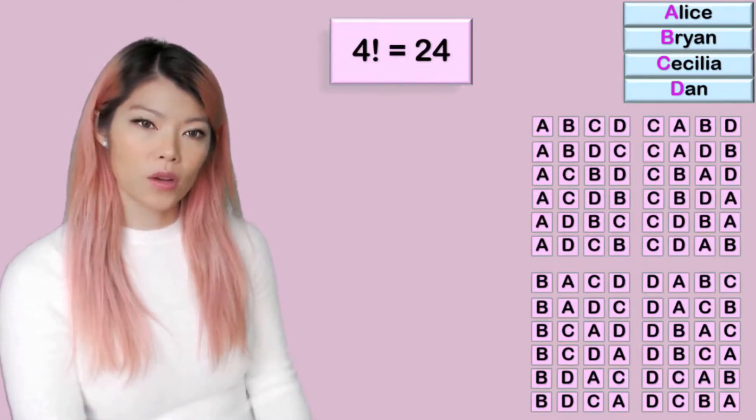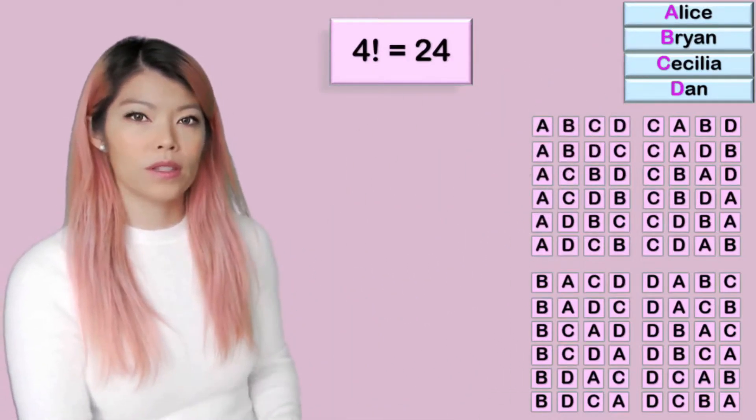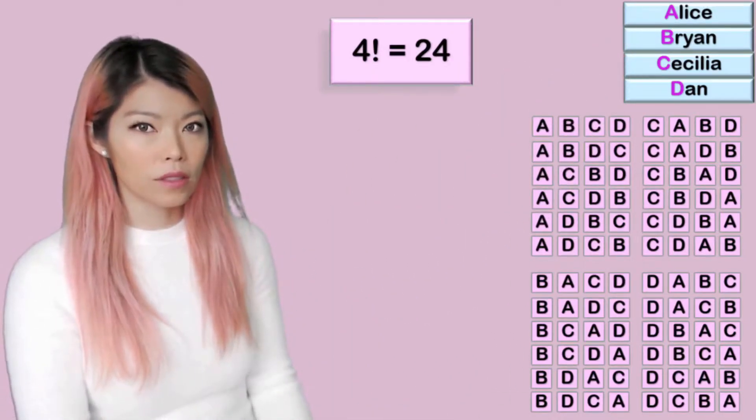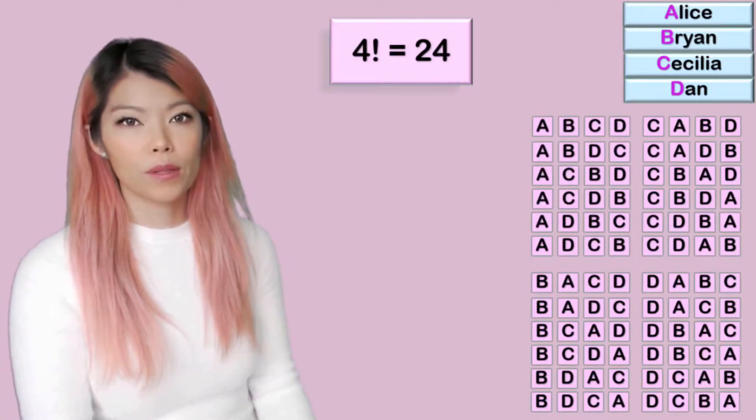Today, we're going to ask the question: if these four people were to sit at a round table, how many different arrangements could there be?